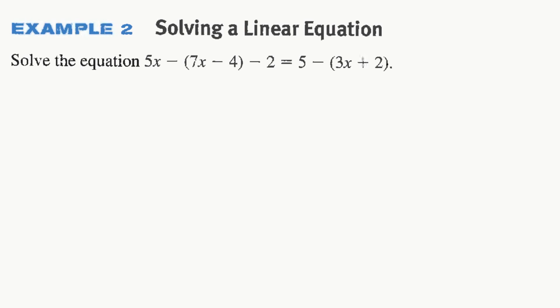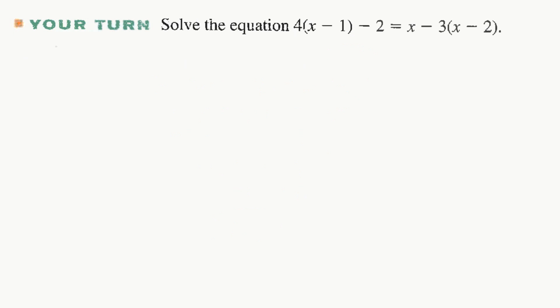A little harder, but still review. We're going to distribute this negative, so we'll have 5x minus 7x plus 4 minus 2 equals 5 minus 3x. Distribute the negative to the 2 minus 2. We'll clean out both sides. 5x minus 7x is negative 2x plus 2 equals negative 3x. 5 minus 2 is 3. And then let's add 3x to both sides. So we'll have x plus 2. Let's cancel out. It equals 3. And we'll subtract 2 from both sides, and we'll get x equals 1.